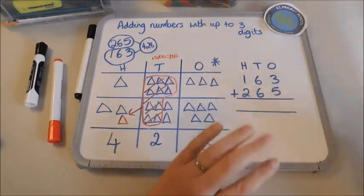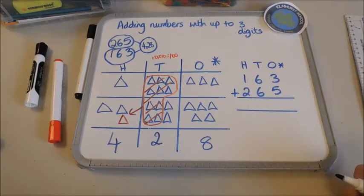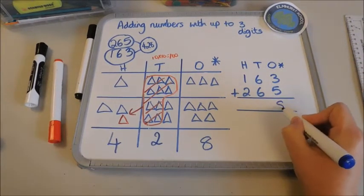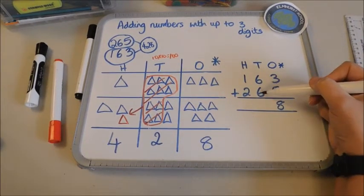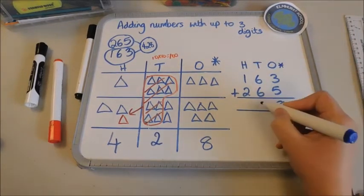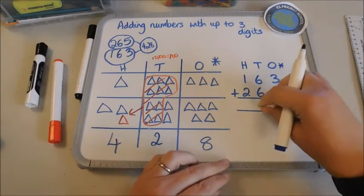Again I start with the smallest column, so that's my ones in this case. Three add five is eight. Six add six is 12. I can't have two digits in there. Some children would actually write it down like that but I'm not allowed that. That's going to give me the wrong answer at the end.